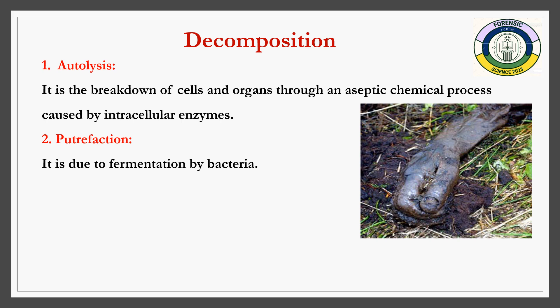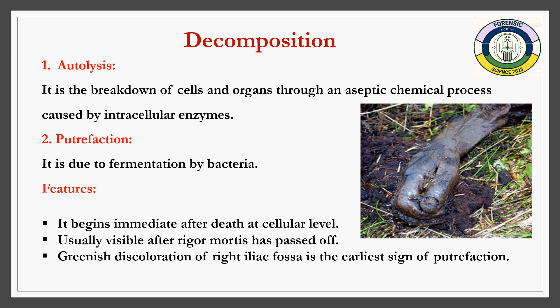Decomposition or putrefaction is of two types: autolysis and putrefaction. Decomposition is the process by which complex organic biomolecules break down into simpler inorganic compounds. Autolysis — 'auto' means self, 'lysis' means breakdown — is where the body's own enzymes act on itself causing cellular destruction. Putrefaction is caused by bacteria and microorganisms such as Staphylococcus, Clostridium, Proteus, and Streptococci. It begins immediately after death at the cellular level and is usually visible after rigor mortis. Importantly, greenish discoloration at the right iliac fossa is the earliest visible sign of putrefaction.